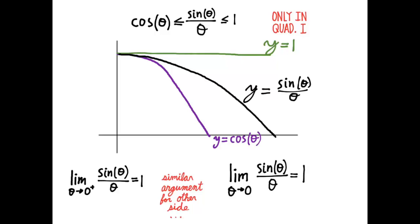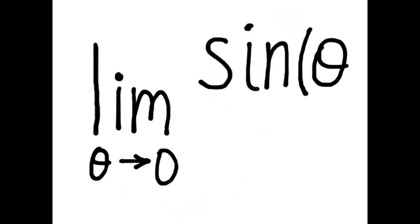And that is such an important result for us that I'm going to write it really big on the final slide. Darn, I ran out of room. But anyway, always remember that the limit as theta approaches 0 of sine theta over theta equals 1.